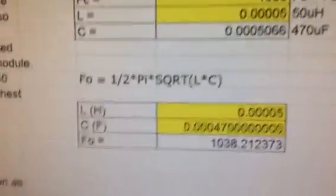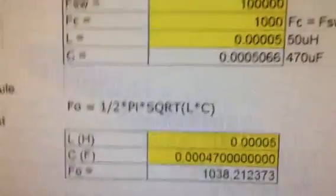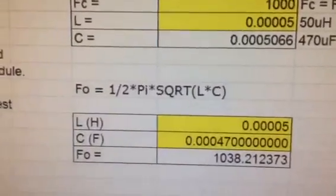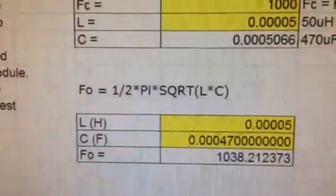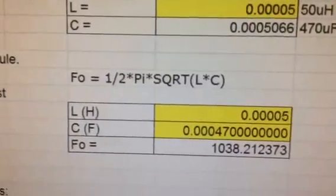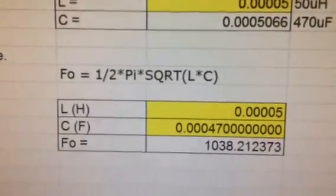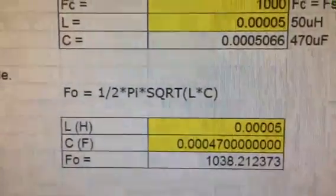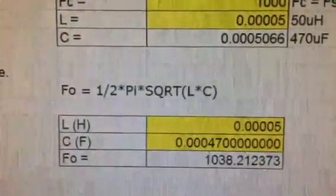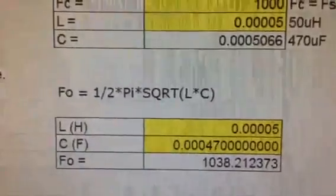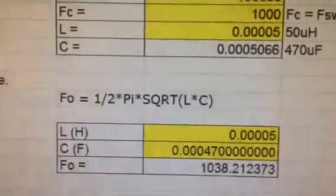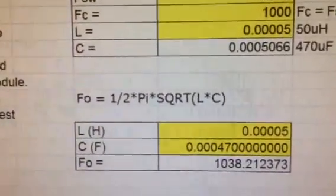All L networks or LC circuits—this happens to be a series LC circuit—have a couple of basic formulas that we can apply. Whether it's a series circuit or a parallel circuit, it's going to have a resonant frequency. The formula is Fo equals 1 divided by 2 times pi times the square root of L times C. So it's a pretty basic equation.